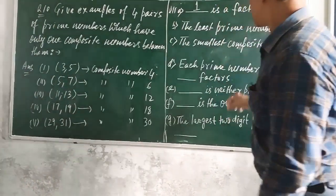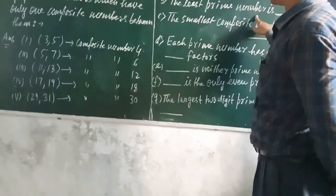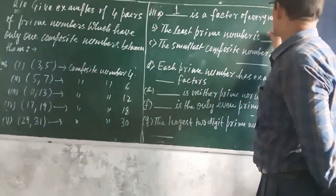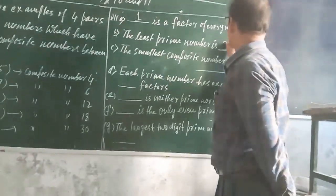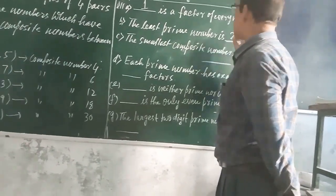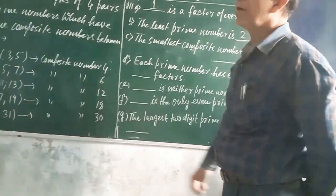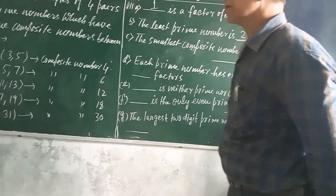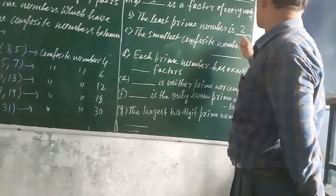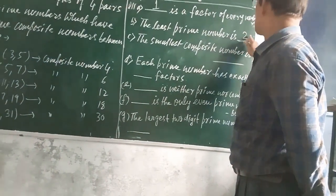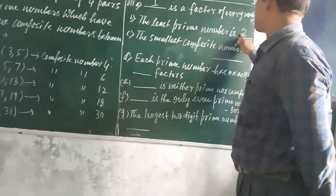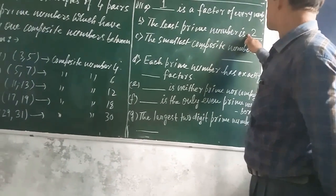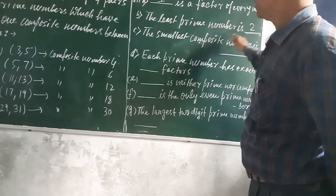The next one is: the least prime number, that is the smallest prime number, is 2. Why is 2 a prime number? Because 2 has only 2 factors — it is divisible by 1 and 2 only. It has 2 factors. So, 2 is the smallest prime number. It is also even.